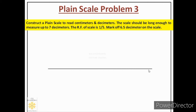This line of 14 centimeters represents 7 decimeters. Dividing into 7 parts means each part will be 2 centimeters in length. 14 divided by 7 means each part will represent 1 decimeter. So we have a part of 2 centimeters which represents 1 decimeter. Let us show 7 parts with the help of a scale.